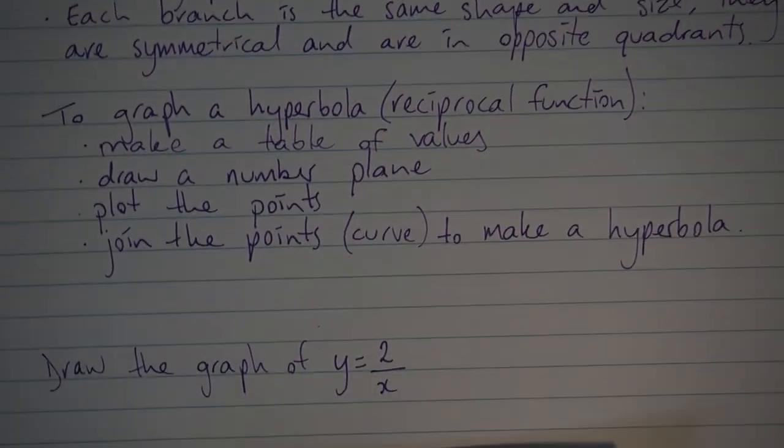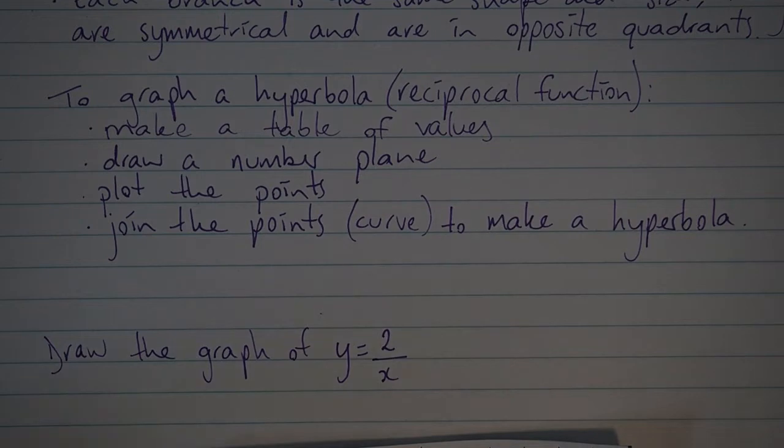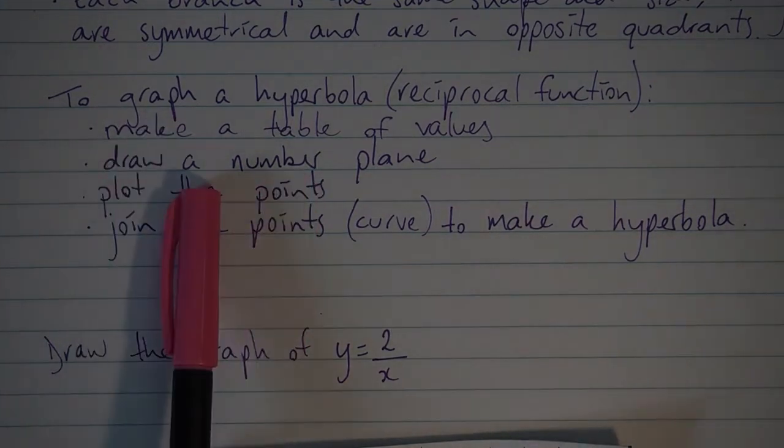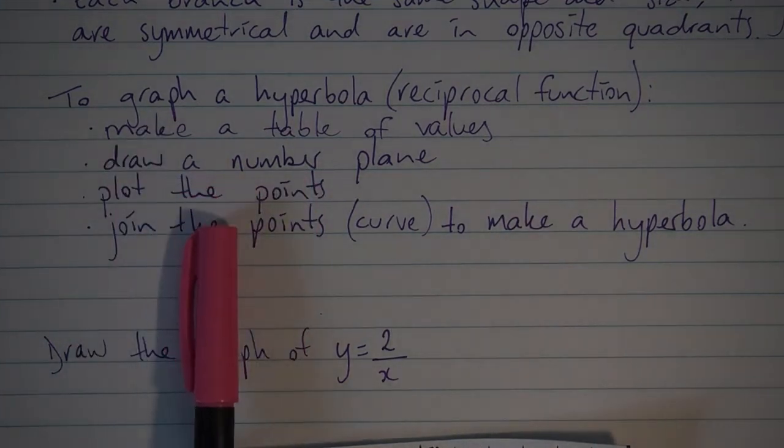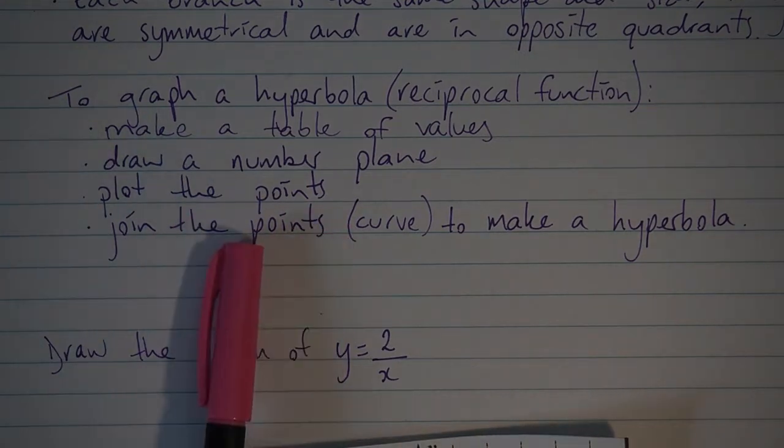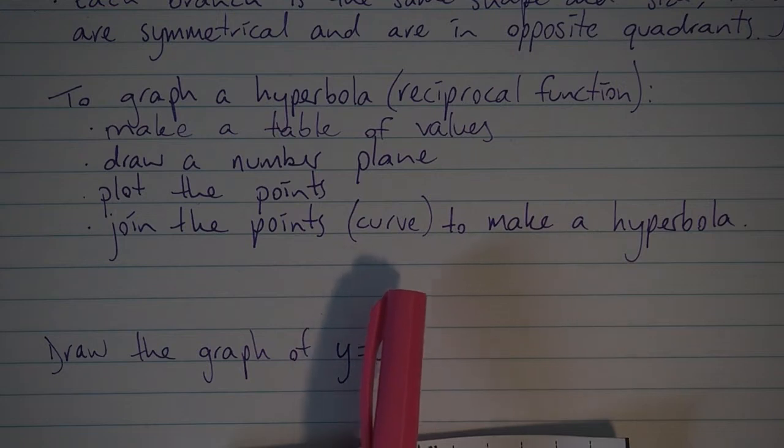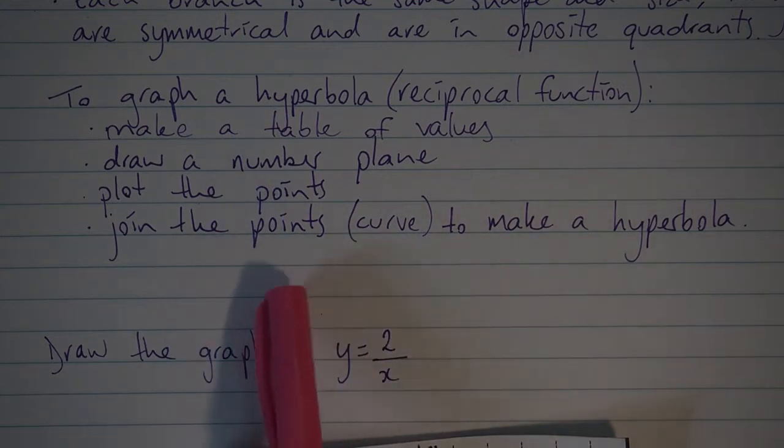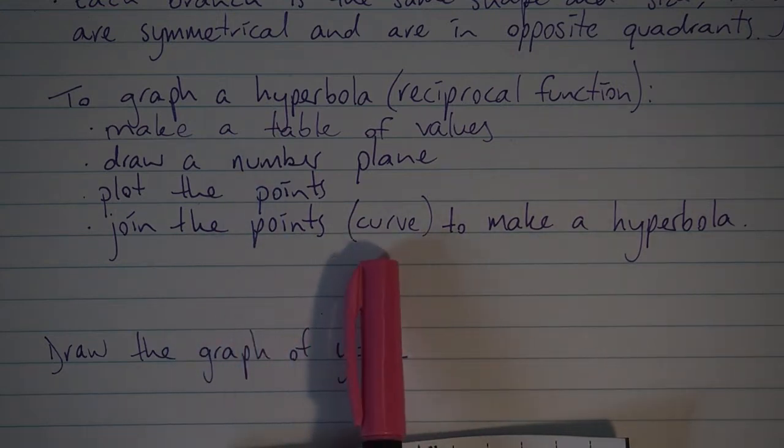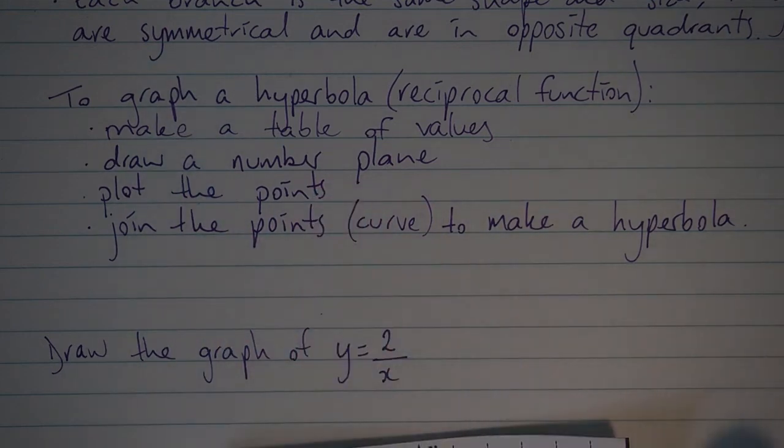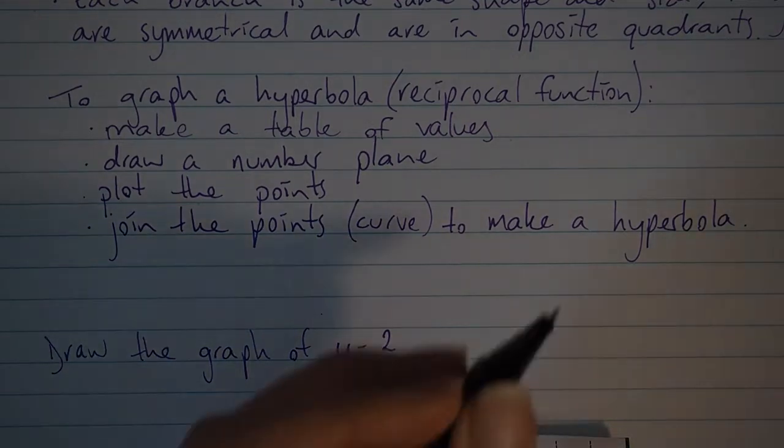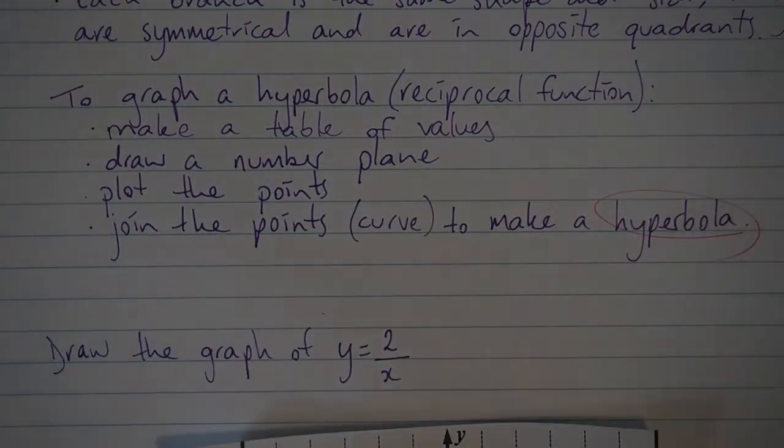To graph a hyperbola, just like any other graph, we make a table of values, draw our number plane if we don't have one already, plot our points, and then join our points. Remember it is a curve, so there is an element of estimation. You do need to make sure that you are not ruling between the points - it is a curve.